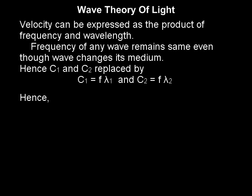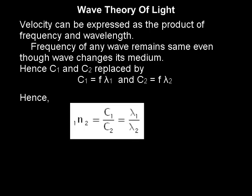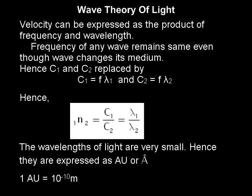Velocity can be expressed as the product of frequency and wavelength. The frequency of any wave remains the same even though the wave changes the medium. Hence, c1 and c2 can be replaced by f×λ1 and f×λ2. Hence, 1n2 can also be written as λ1 / λ2. The wavelengths of light are very small, so they are expressed in smaller units called angstrom units, represented either by AU or degree angstrom. One angstrom unit is 10⁻¹⁰ meter.